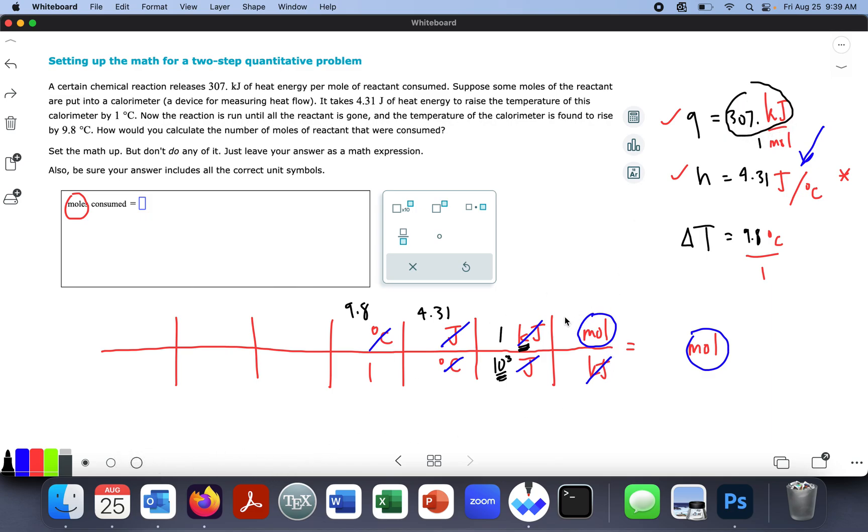This is where students will sometimes put, they'll put the 307 up here. If you're not careful, you may be tempted to do that. In fact, it's really 307 kilojoules per one mole. And there's my solution. I'm going to go here, 9.8 degrees Celsius. And here, 4.31 joules per degree Celsius. And here, kilojoules per, 1 kilojoule per 10 to the 3 joules. And here, 1 over 307 kilojoules mole. And that's going to be, there I have set up the math for a two-step quantitative problem.